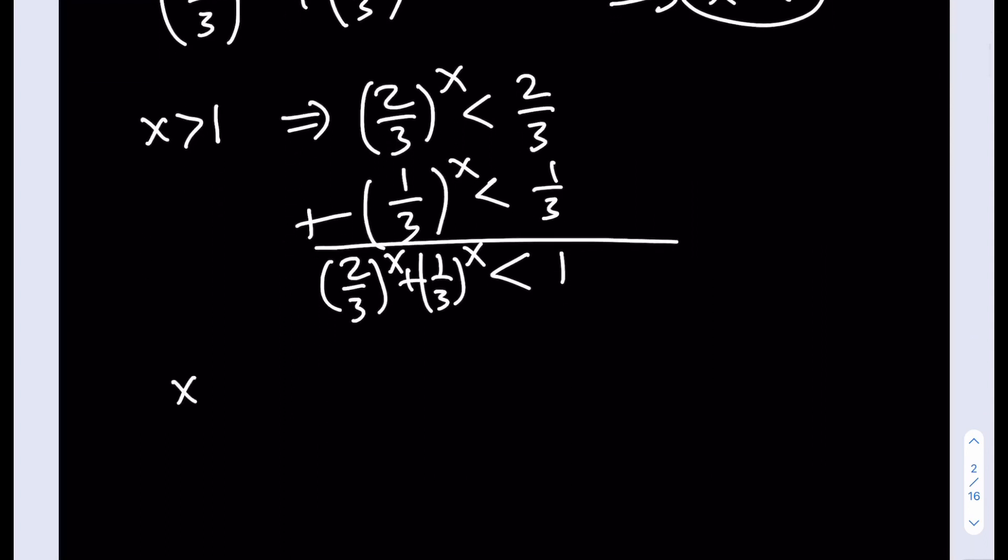Similarly, if x is less than 1, then we have (2/3)^x. Now think about square rooting this number. If you square root a fraction, a number that's between 0 and 1, actually the number gets bigger. Example, think of a number like 0.09. You square root it, you get 0.3. It gets bigger. So this is going to be bigger than 2/3. And the same thing happens for (1/3)^x. That's going to be greater than 1/3.